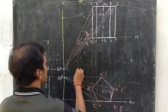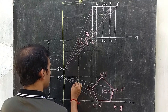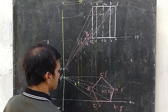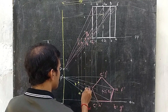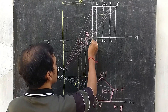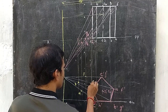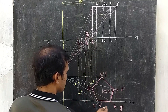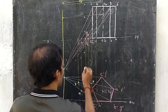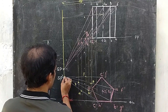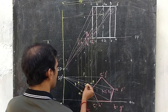Similarly connect SP-dash with J-dash, I-dash, F-dash. Now draw a perpendicular from I1 to get capital I, from H1 to get capital H, from F1 to get capital F, from G1 to get capital G, and from O2-1 to get capital O2.